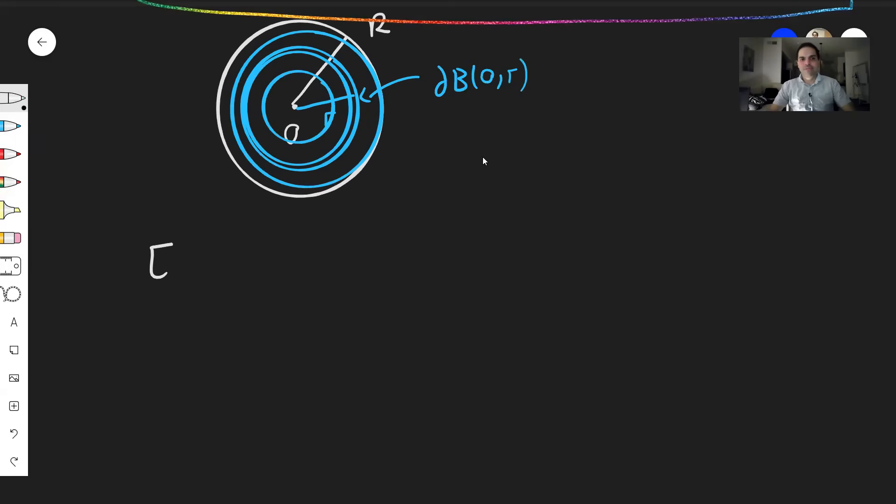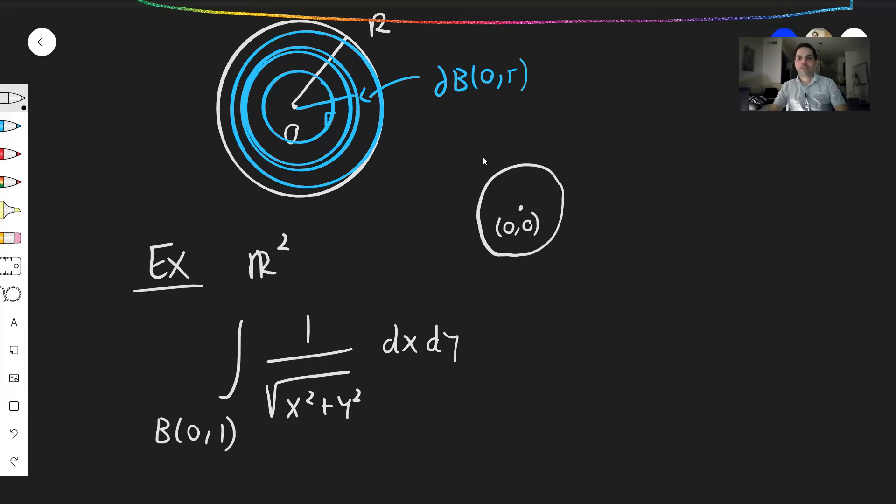So for instance, let's say in R², let's try to integrate the function 1 over square root of x² plus y² over the ball centered at 0 and radius 1. And again, technically I should write 0,0, but I'll just abbreviate it as 0 and radius 1. Then again, what does this formula say? It says that first integrate on the sphere or here the circle centered at 0 and radius r and then integrate over the radius.